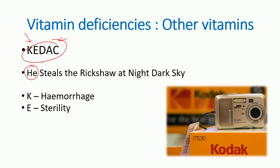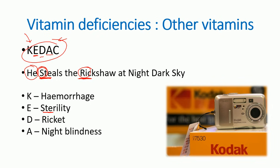Connecting the mnemonic: K → H-E = hemorrhage; E → S-T = sterility (first three letters of 'steals'); D → RI = rickets ('rickshaw'); A → 'night' = night blindness; C → 'sky' sounds like scurvy. So: hemorrhage, sterility, rickets, night blindness, and scurvy are the respective deficiency diseases for vitamins K, E, D, A, and C.